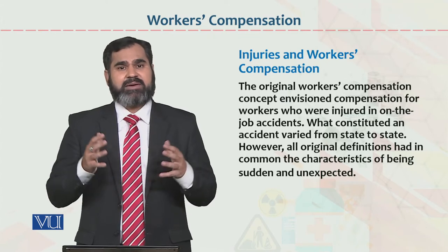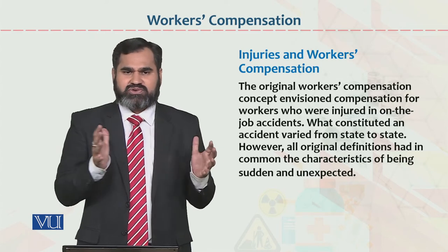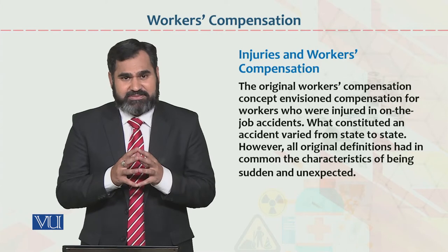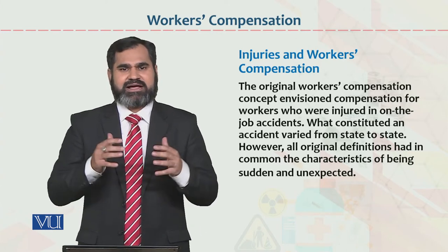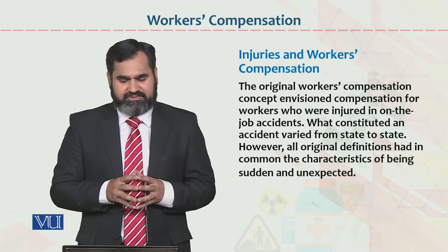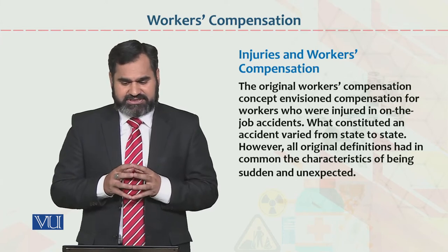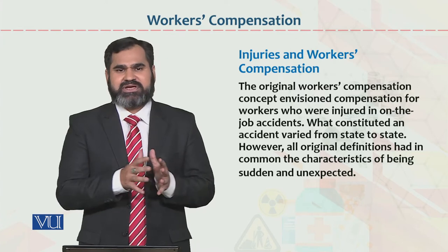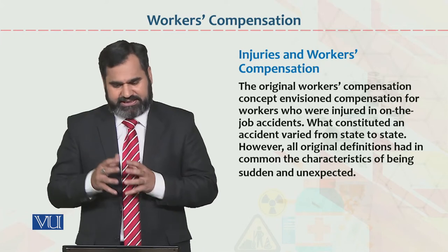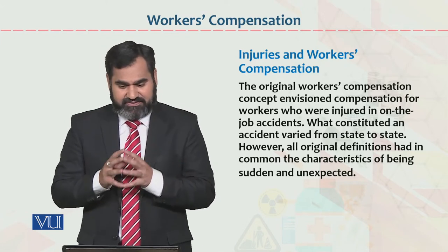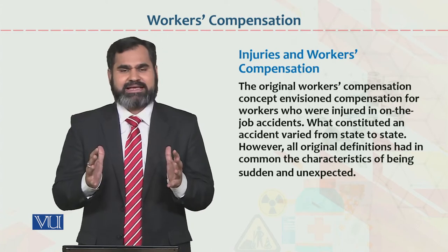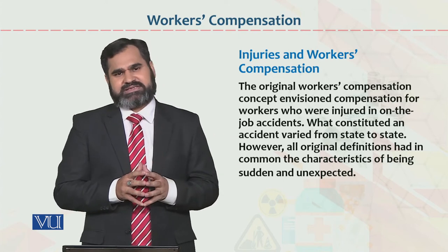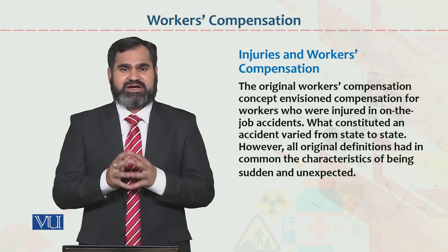Injuries and workers' compensation - workers' compensation اور employee کی injury کا بہت گہرا تعلق ہے۔ Injury کی nature کو دیکھتے ہوئے employee کو compensate کیا جاتا ہے۔ The original workers' compensation concept envisions compensation for workers who were injured in on-job accidents۔ What constituted an accident varied from state to state in the United States - ایک state میں $1,000 اور دوسری state میں same injury پر $5,000 pay ہو سکتے ہیں کیونکہ قوانین state to state differ کرتے ہیں۔